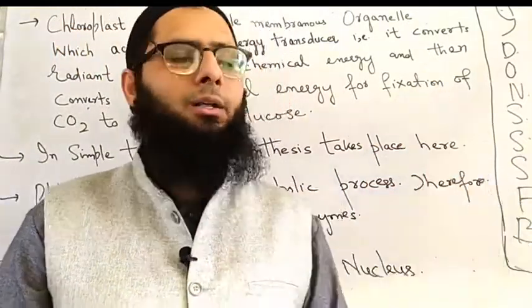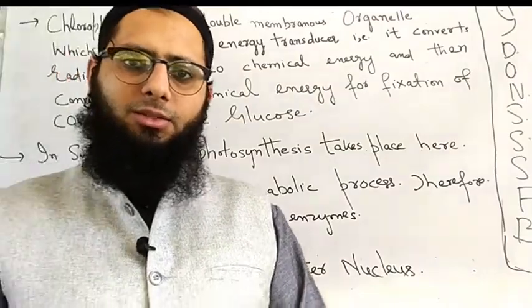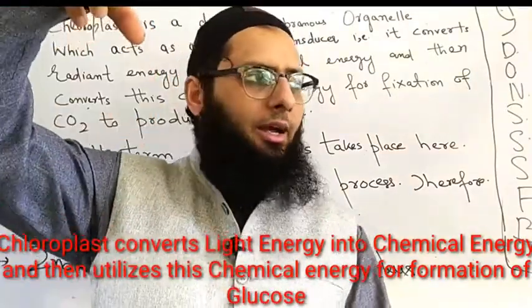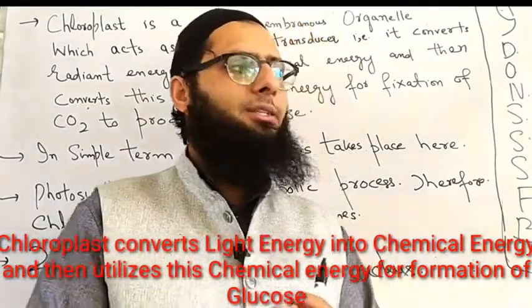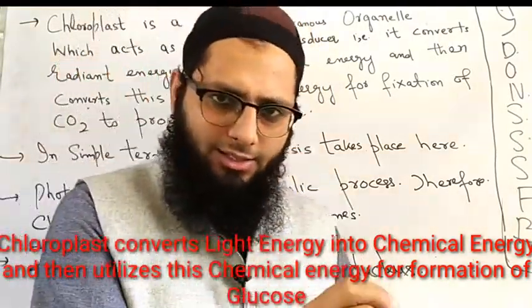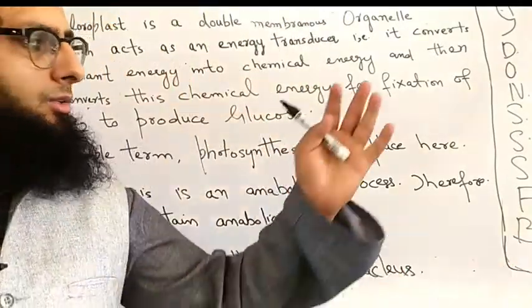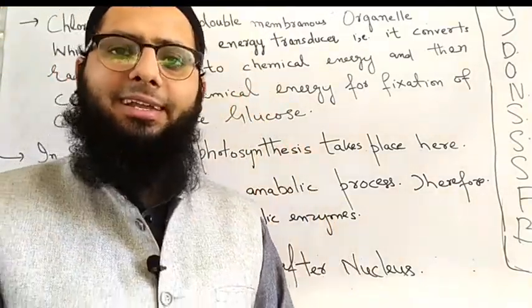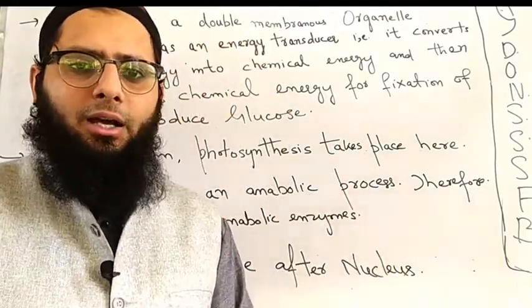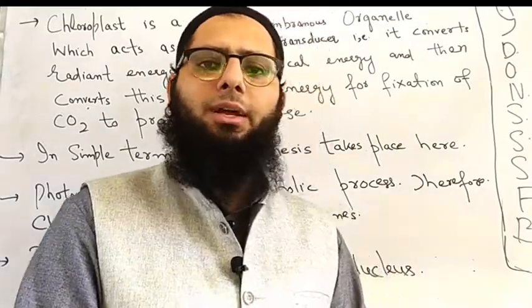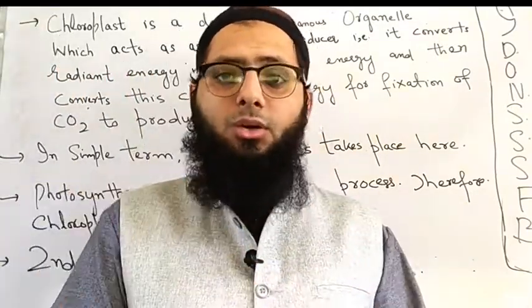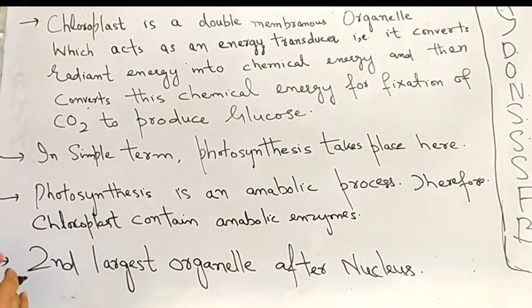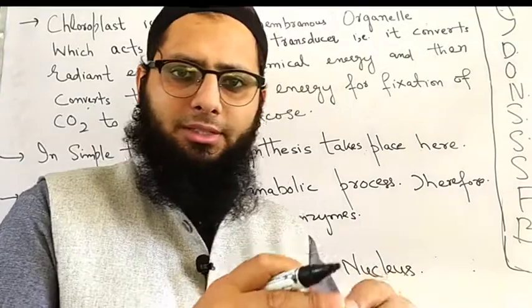So let us start with the introduction part. What actually are the chloroplasts? Chloroplast is actually a double membrane structure. It acts as an energy transducer, energy converter, where the photo energy, radiant energy, light energy is converted into chemical energy. Then this chemical energy is utilized for fixation of carbon dioxide to produce food. So this is an anabolic process, that means something is being formed over there, there is fusion of something, then something is being formed.